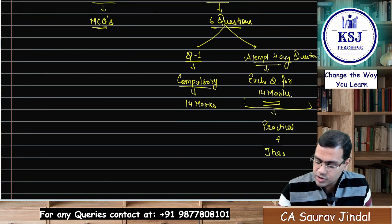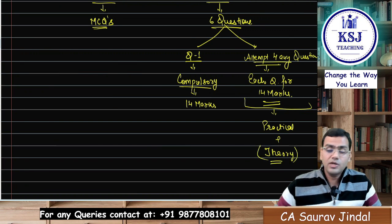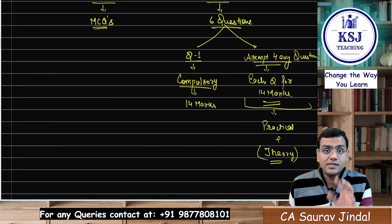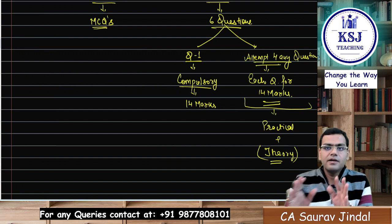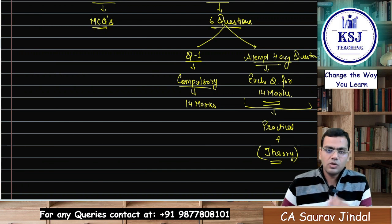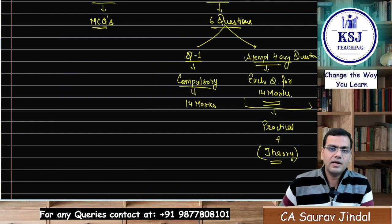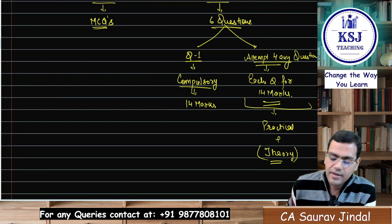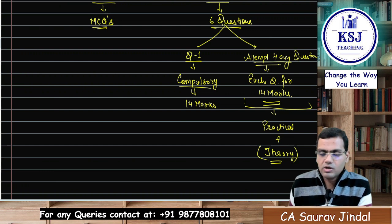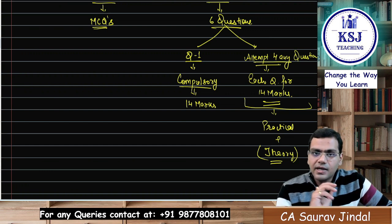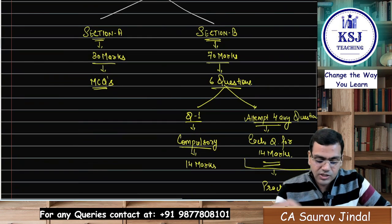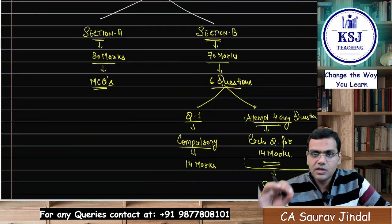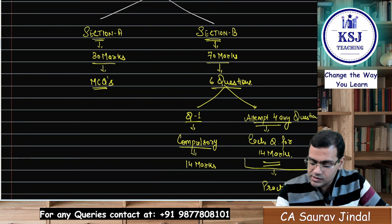In these five questions — the remaining five out of which you have to attempt four — there will be practical plus theory questions. There will be a theory question of 14 marks. Earlier you were getting theory for 20 marks; now you will be getting a theory question for 14 marks, which you can skip in the optional. That is totally your choice. The rest of the part will be practical. And Section A MCQs — that is compulsory for 30 marks.